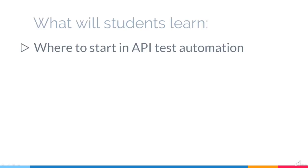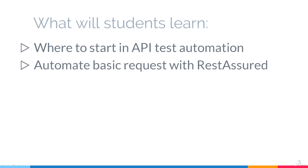This is a course for complete beginners, so students will learn where to start in API test automation. How to add REST Assured to your Java project and automate every possible endpoint — GET, POST, PUT, UPDATE, PATCH, and DELETE requests — and use JSON path to get values from the response.